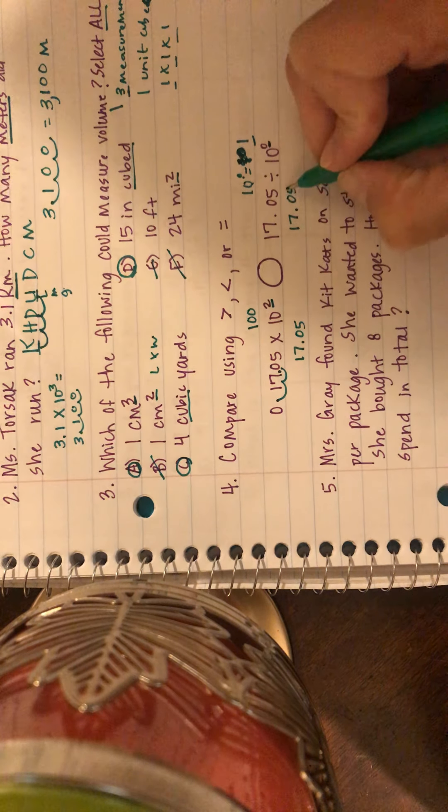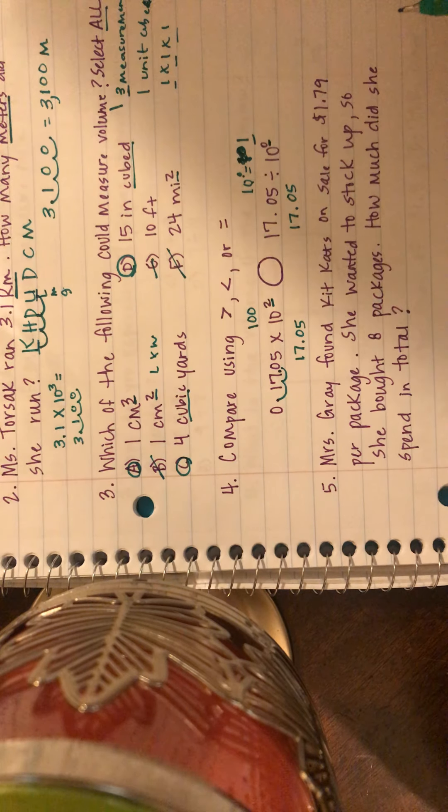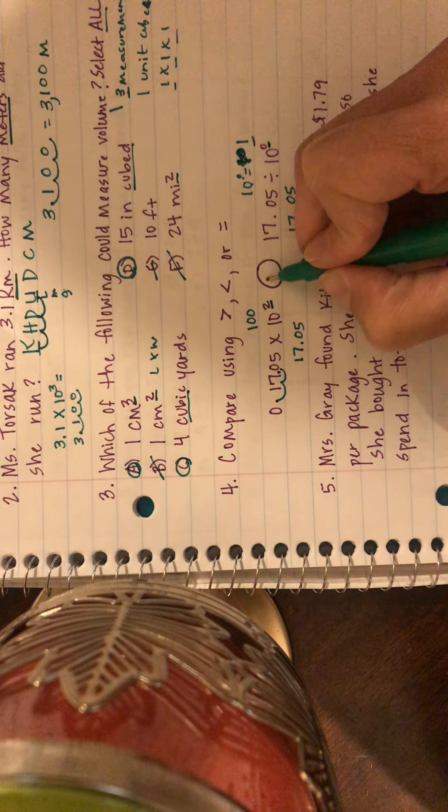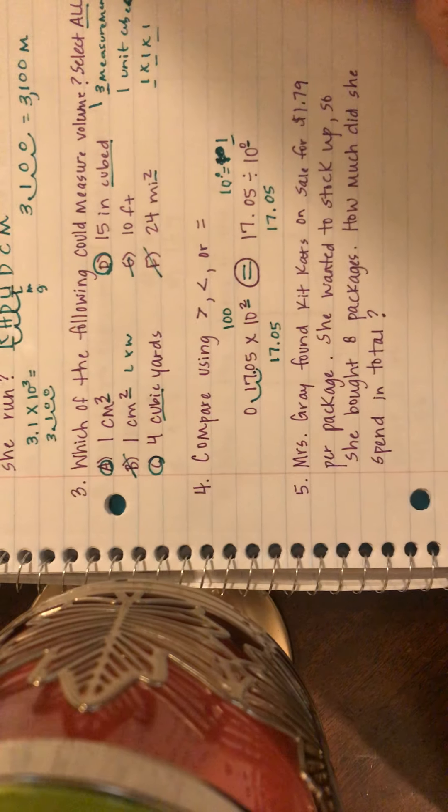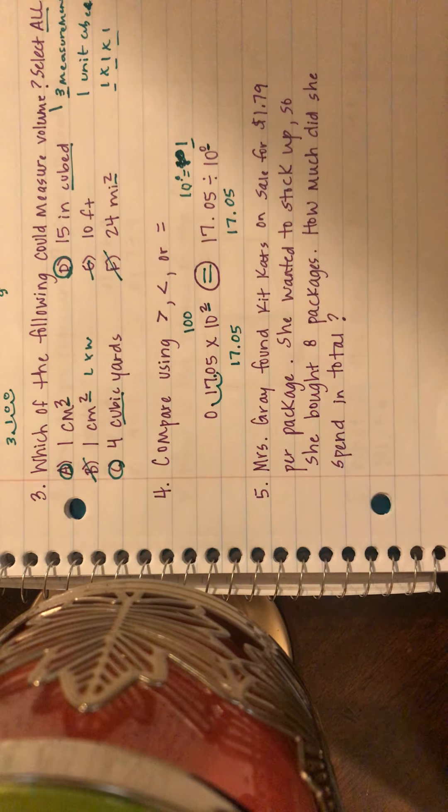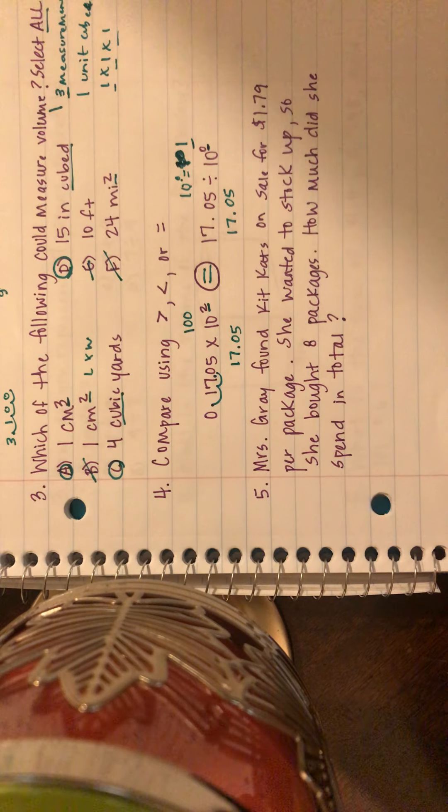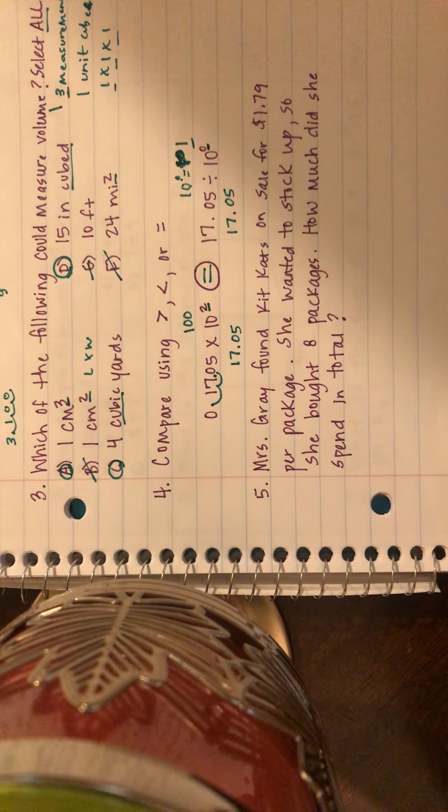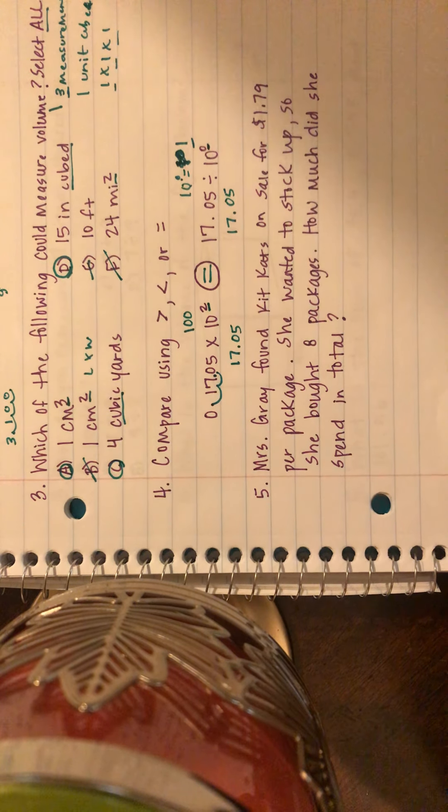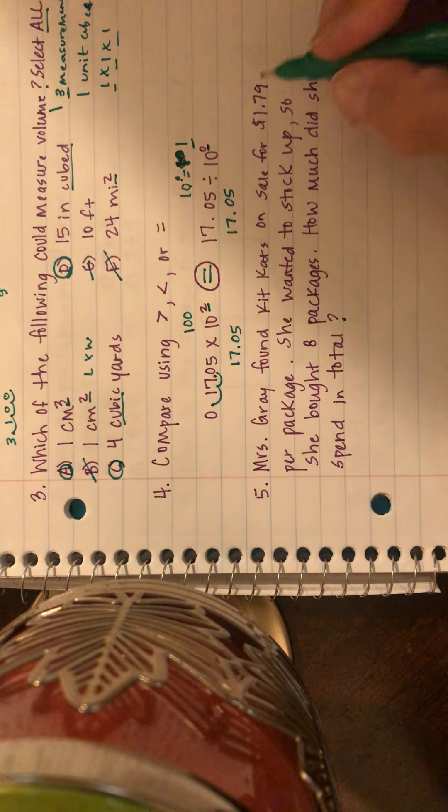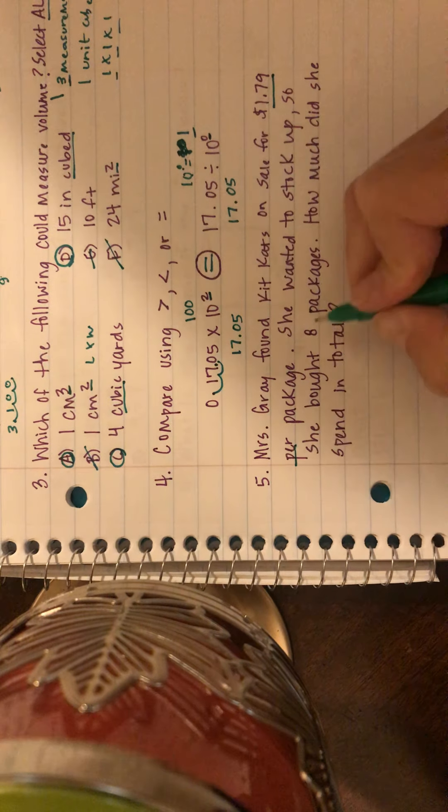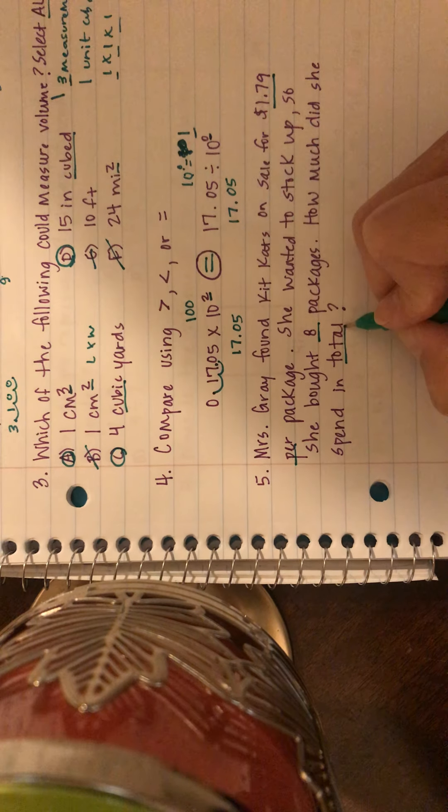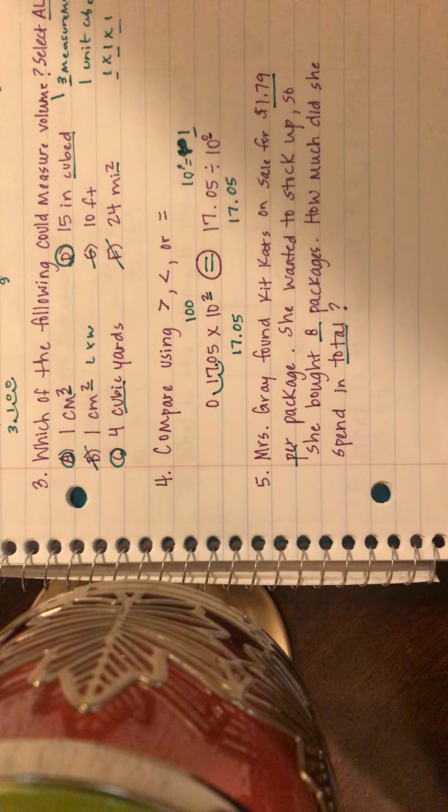Alright, last one, number five. Mrs. Gray, because we know she loves Kit Kats, she found Kit Kats on sale for $1.79 per package. She wanted to stock up so she bought eight packages. So I know I've got they're $1.79 each per package, she's buying eight, and I need to know the total.